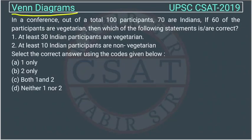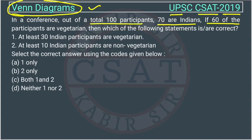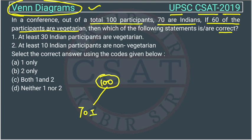This is a question of reasoning from the chapter Venn Diagram, asked by UPSC in CSED paper of 2019. In a conference, out of total 100 participants, 70 are Indians. If 60 of the participants are vegetarian, then which of the following statements are correct? So we have total 100 participants, out of which 70 are Indian and 60 are vegetarian.